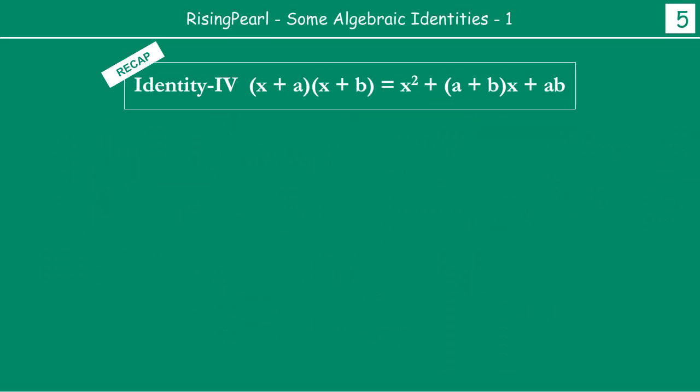Let us keep going forward. Now, fourth identity, friends, is that if you give x plus a times x plus b, so this basically is x squared plus a plus b x plus ab.